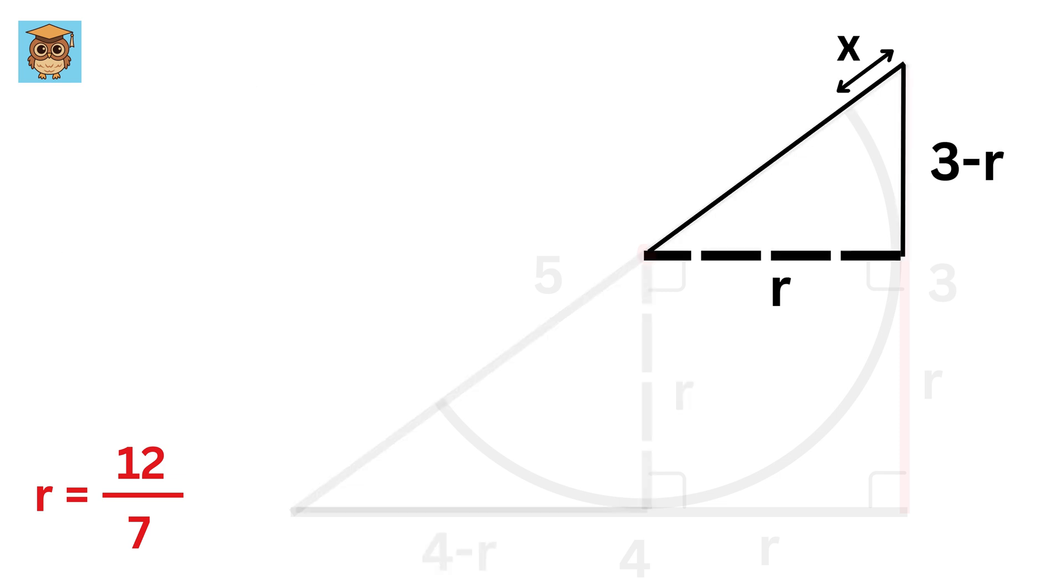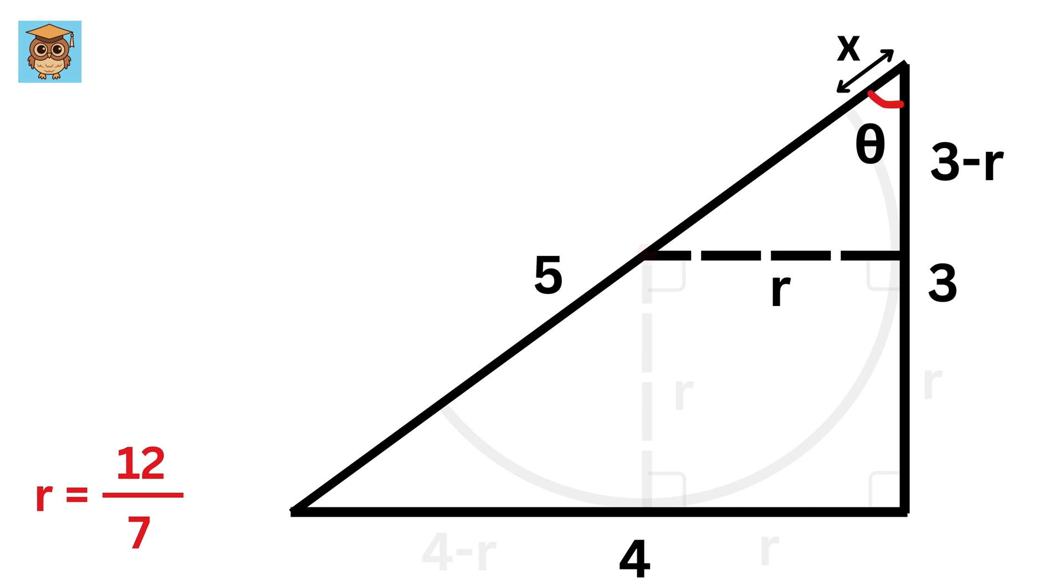Now consider this triangle and this big triangle. Again, both have the same angles, theta, and both are right triangles, so they will be similar.